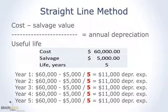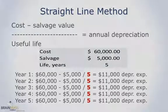Notice that as you get into year two, year three, year four — it's always a five-year asset. You don't change that denominator because you're not in the first year. It's not how many years are left; it's what the life was in the beginning, and you use that same denominator each year. So it's the same in each of the five years.